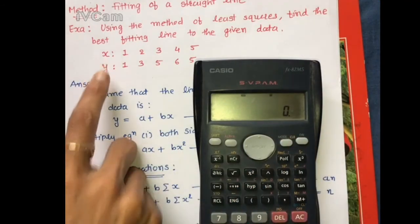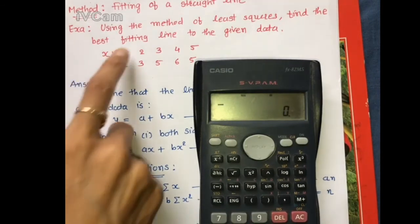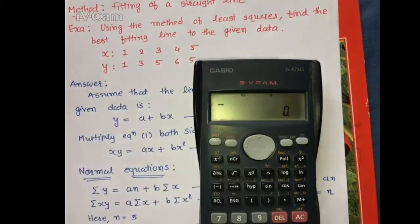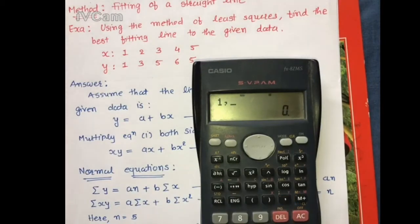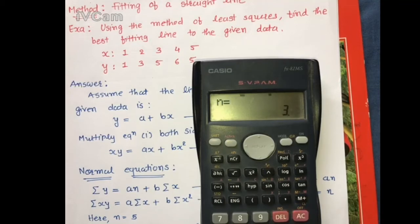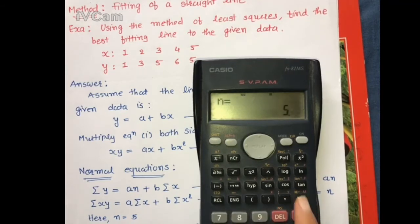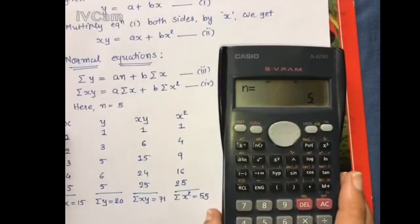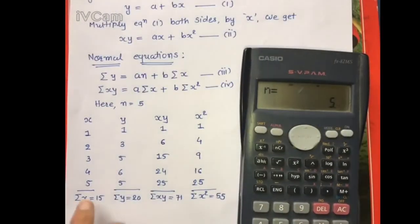Now input the x and y data pairs. Our data pairs are (1,1), (2,3), (3,5), (4,6), and (5,5). Enter each pair followed by M+: press 1, 1, M+; then 2, 3, M+; then 3, 5, M+; then 4, 6, M+; then 5, 5, M+. All data is now inputted.